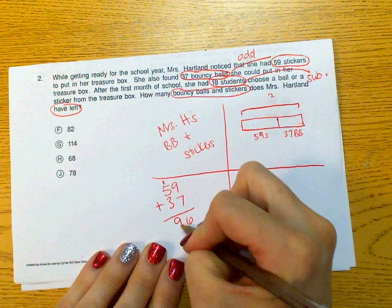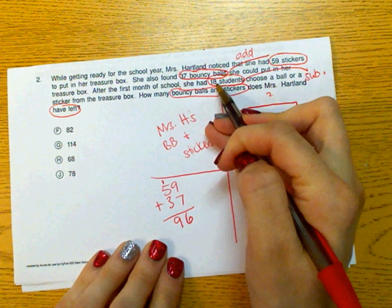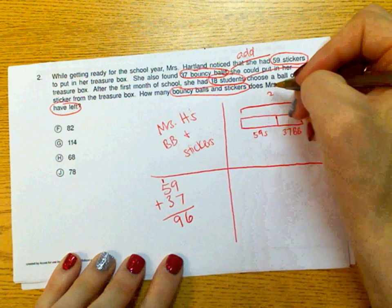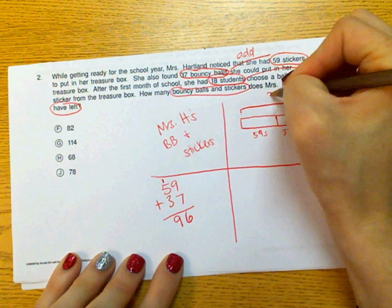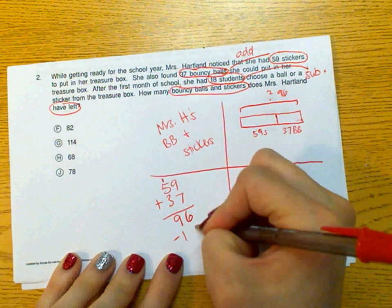Now a lot of the students will stop here and say, oh the answer is 96. But they have to remember to go through, and we're also going to be subtracting. So we're going to take this total, which was 96. We're going to take 18 away from that. 96 minus 18.